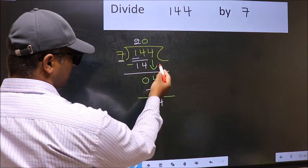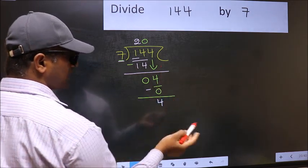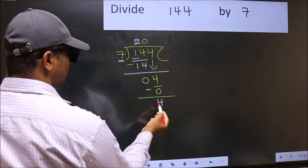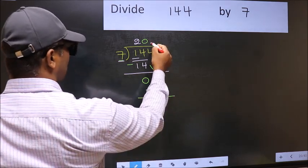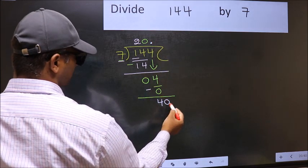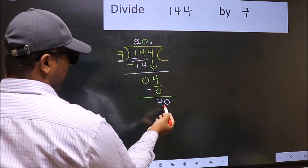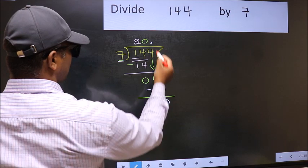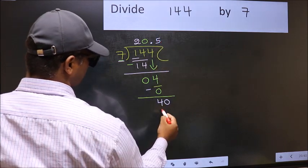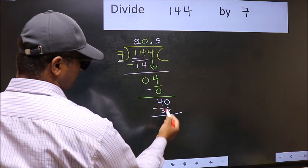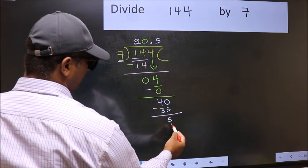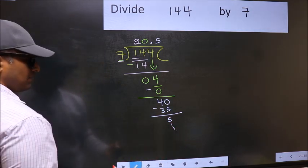Over here, we did not bring any number down. And 4 is smaller than 7. So now you can put dot and 0. So 40. A number close to 40 in 7 table is 7 fives 35. Now you subtract, you get 5, and continue the division. I am not doing that.